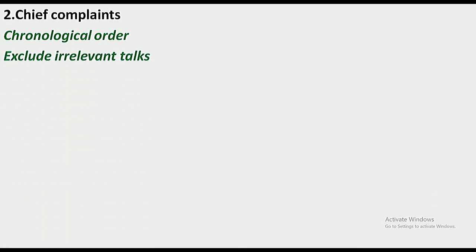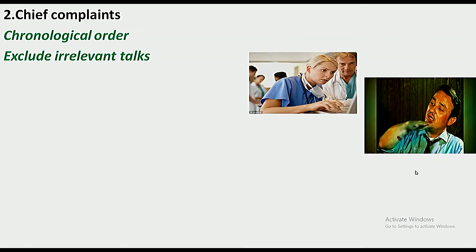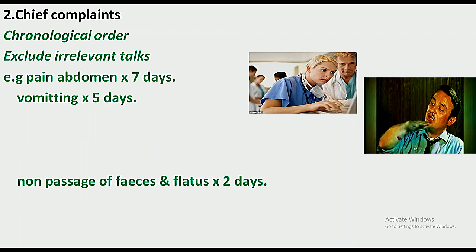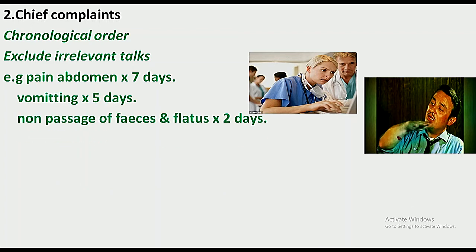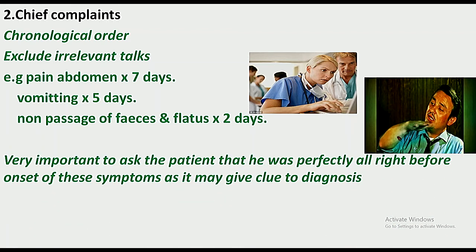Chief complaints should be noted in chronological order — whichever symptom appeared first should be recorded first. Exclude irrelevant talks, such as when a patient has flight of ideas. For example: pain in abdomen for seven days, vomiting for five days, and non-passage of faeces and flatus for two days. It is also important to confirm that the patient was perfectly all right before these symptoms, as that gives a clue to the diagnosis.